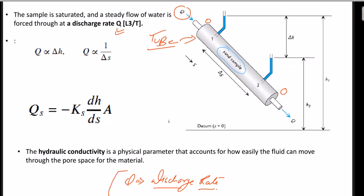Both ends of the sample were not at the same height — the tube was tilted. One end was at a higher elevation and the other end was at a lower elevation. From the experiments he came to some conclusions. The first was that Q, the discharge rate, is directly proportional to delta H — the elevation difference between the two ends.